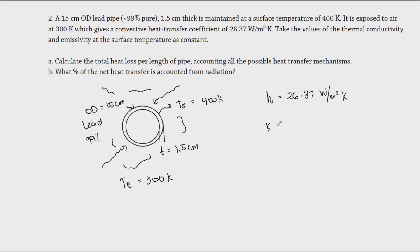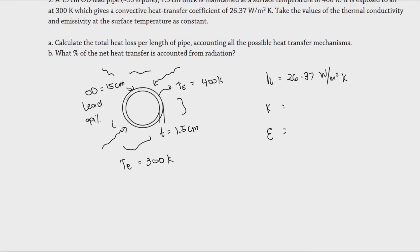The thermal conductivity and emissivity should be evaluated at the surface temperature and considered constant. Since the problem states they are constant at the surface temperature, I'll use the surface temperature to evaluate k and epsilon. The first question asks us to calculate the heat loss per length of pipe accounting for all possible heat transfer mechanisms — there are three main ones involved.